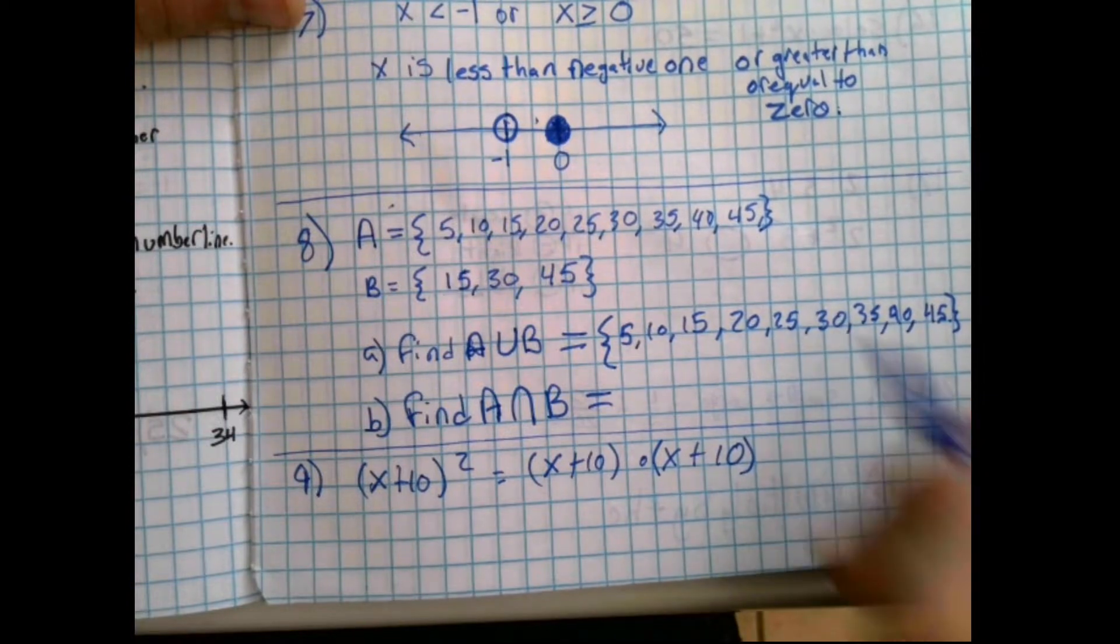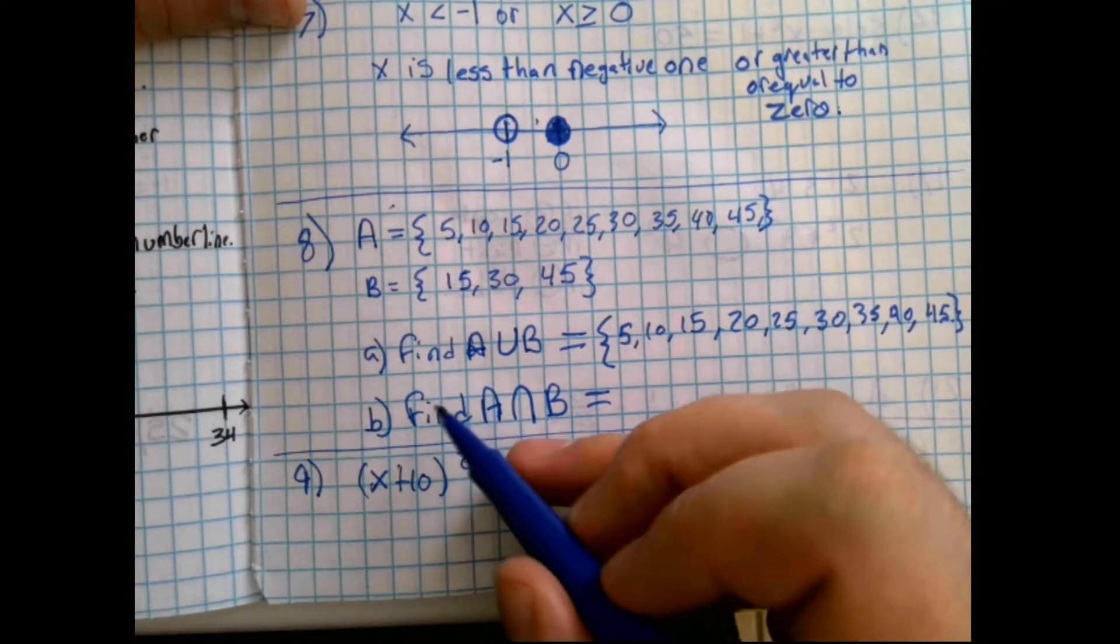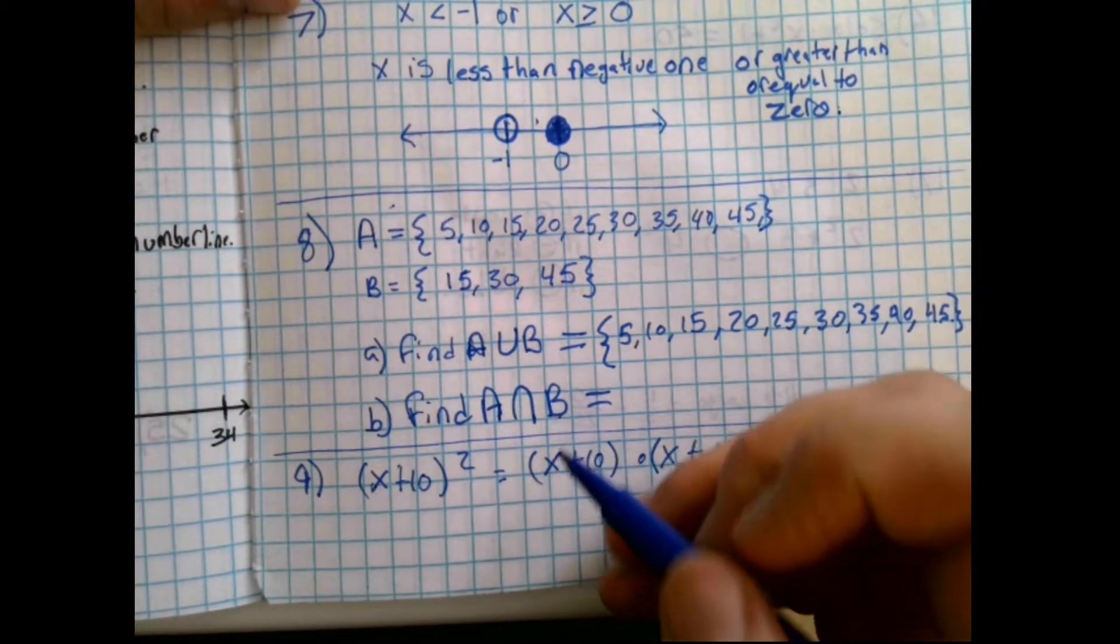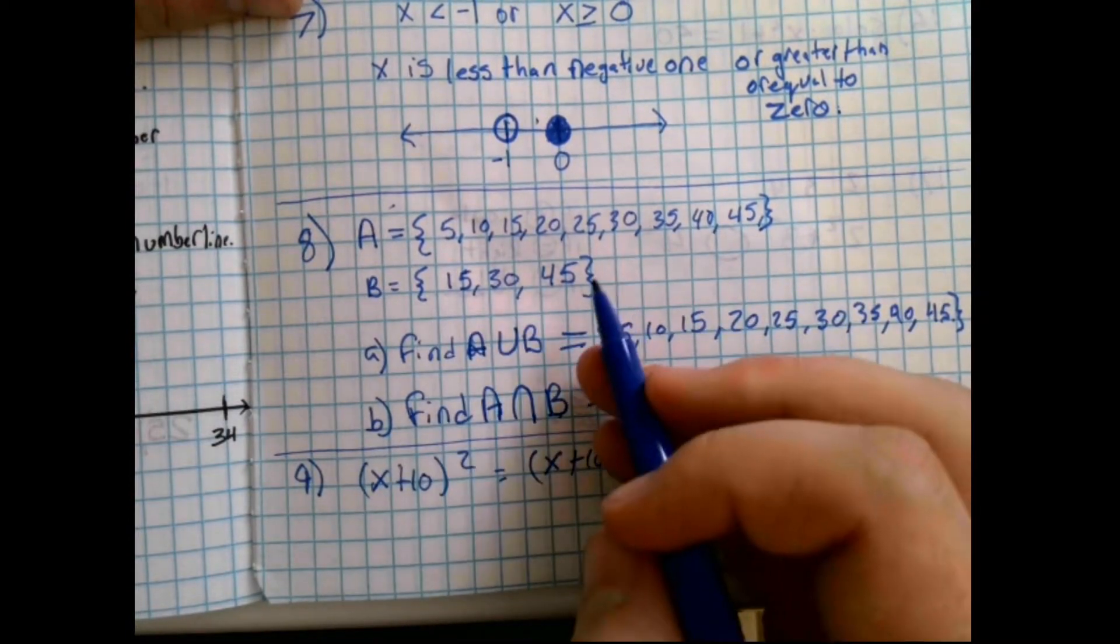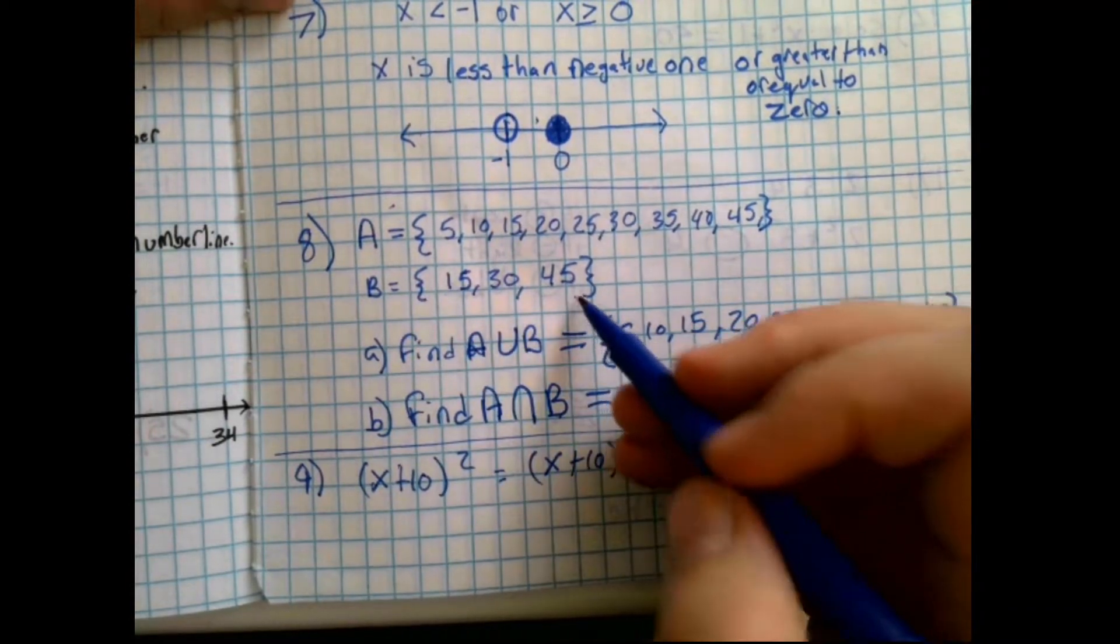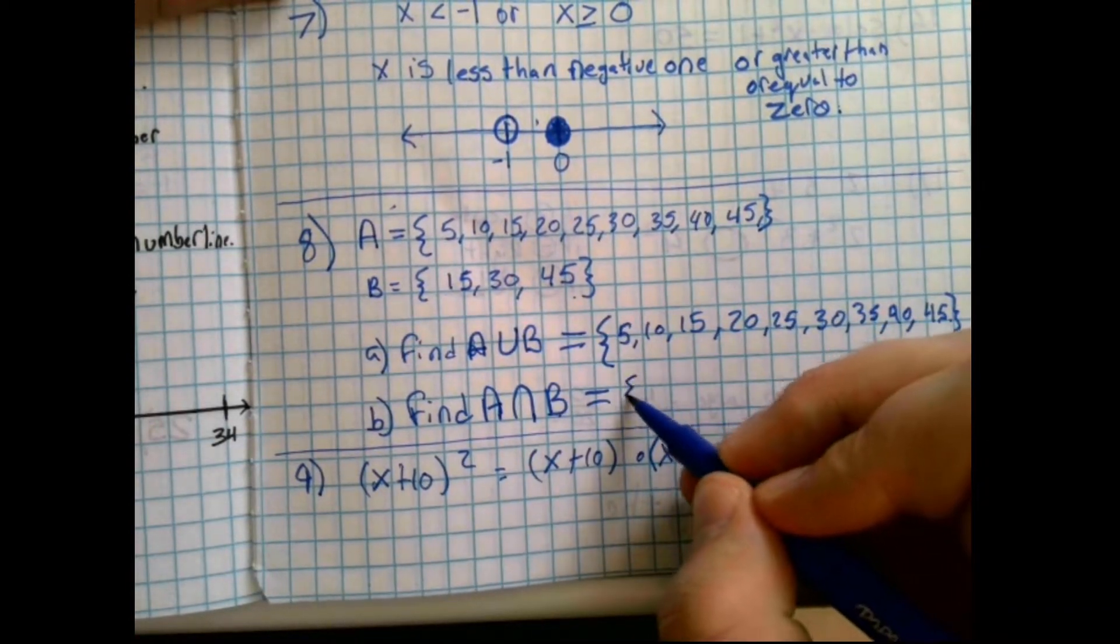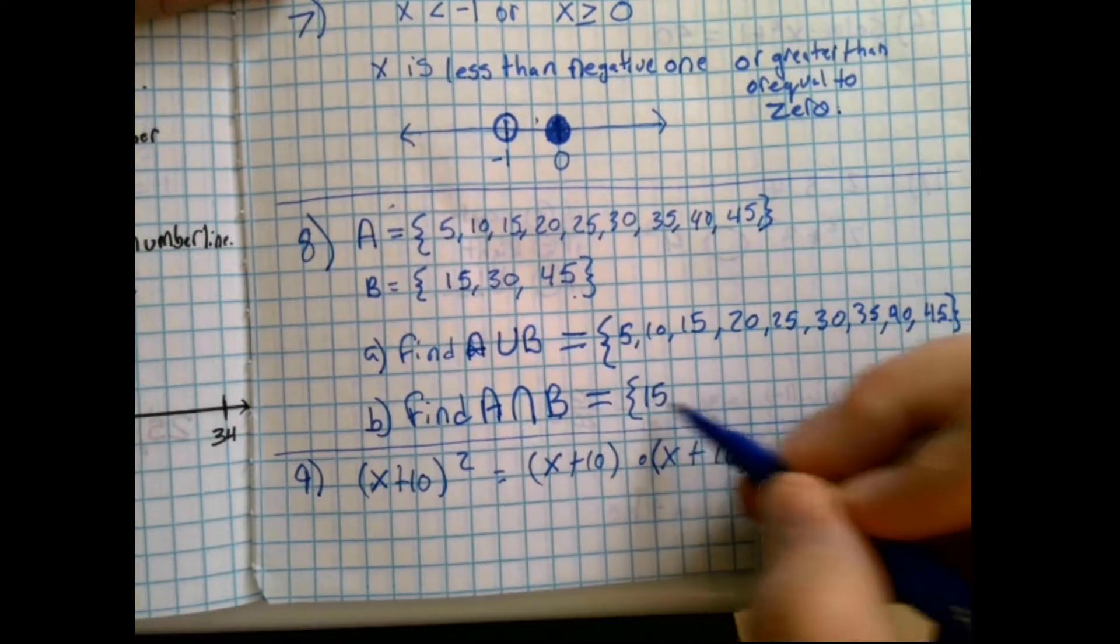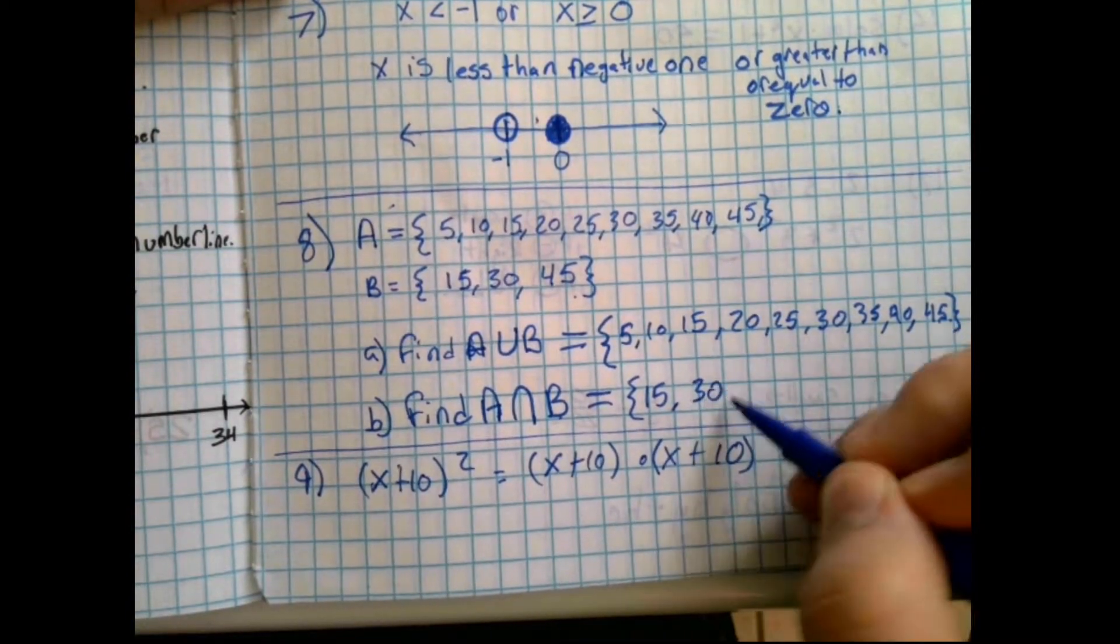To find the intersection, the things which are in A and B, again, since this is a subset of the larger set, the things that are in both is everything that's in B. B is going to be 15, 30, and 45.